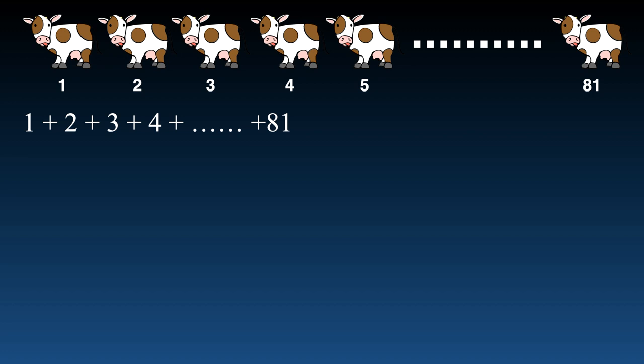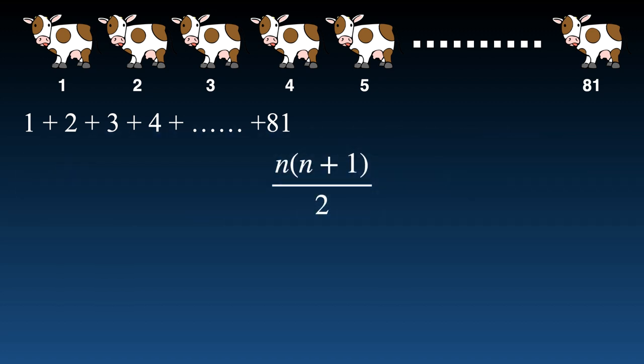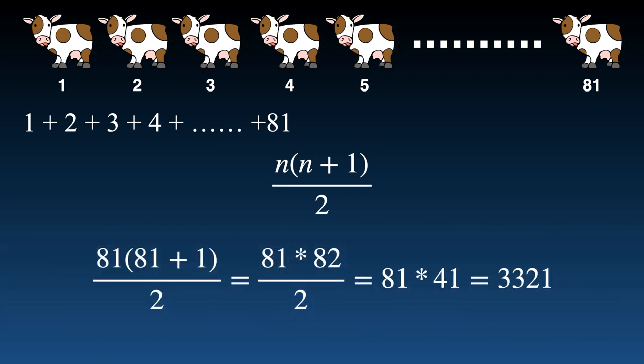This series is the sum of n natural numbers where n is 81. We know that the sum of n natural numbers is calculated using the formula n × (n + 1) / 2. Substituting n = 81: 81 × 82 / 2 = 81 × 41 = 3321. Thus the total liters of milk from 81 cows is 3321.